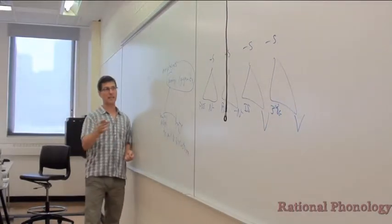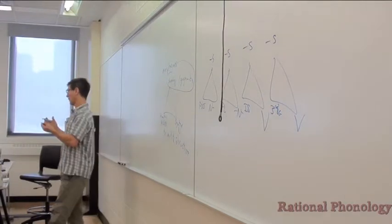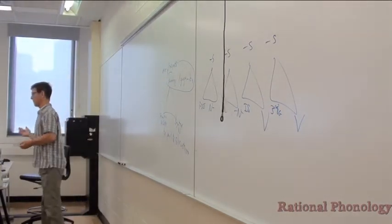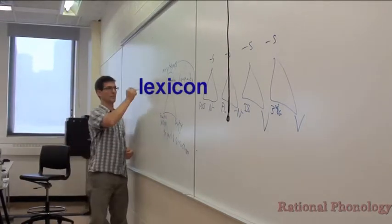So we got morphemes, and we got a bunch of them, and we have a list or a collection of morphemes in our mental grammar. What do we call that collection? The lexicon.